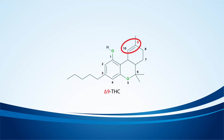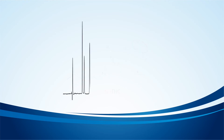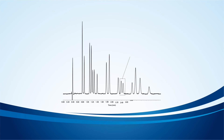Sometimes we use standardized rules, and other times we might fall back on historical precedent, like how we use Delta to refer to the fact that we're describing the location of a double bond. In this case, the double bond extends between carbons 8 and 9, so that makes this isomer Delta 8 THC.